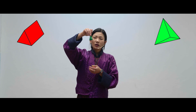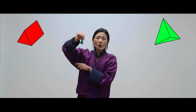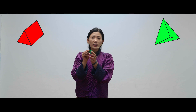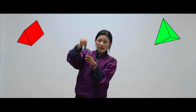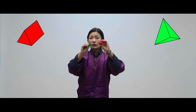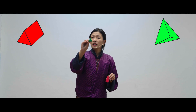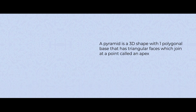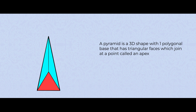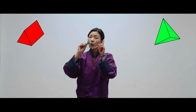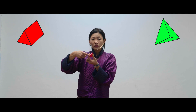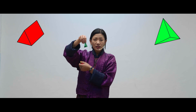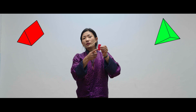You will understand this better when I show you the next shape. This shape has triangular faces, so we call it a pyramid. This shape also has a triangular face that is different from this triangular face. The red one is a prism and the green one is a pyramid. A pyramid is a 3D shape with one polygonal base that has triangular faces, which join at a point called an apex. So, a pyramid has only one polygonal face and triangular faces, while a prism has rectangular faces.